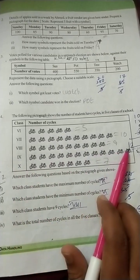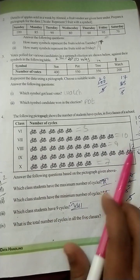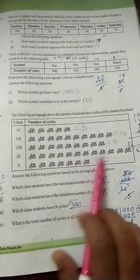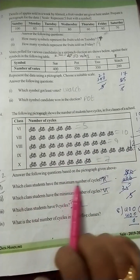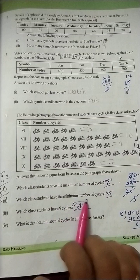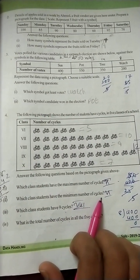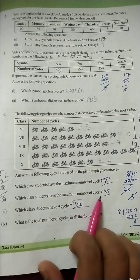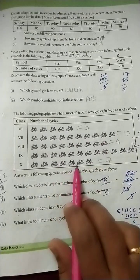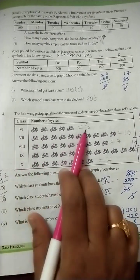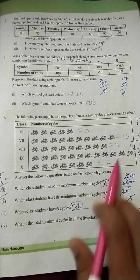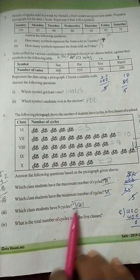Maximum means more number of cycles when compared to all other classes. Which class students they are asking? See, ninth class students. How? More number of cycles when compared to the other classes. So we should write ninth class.